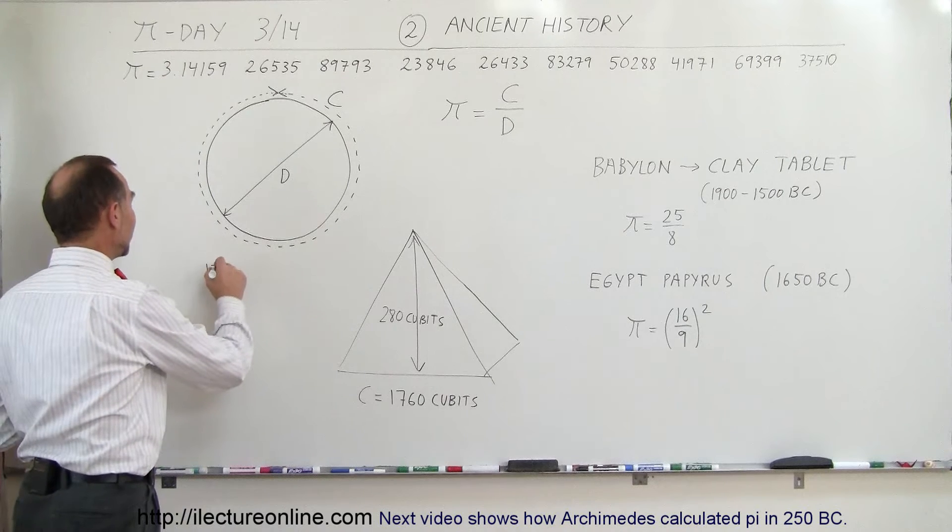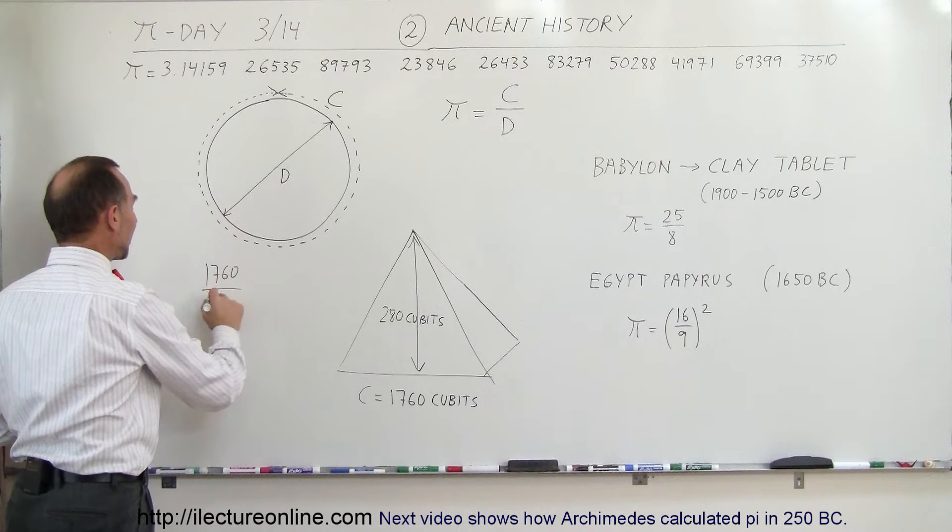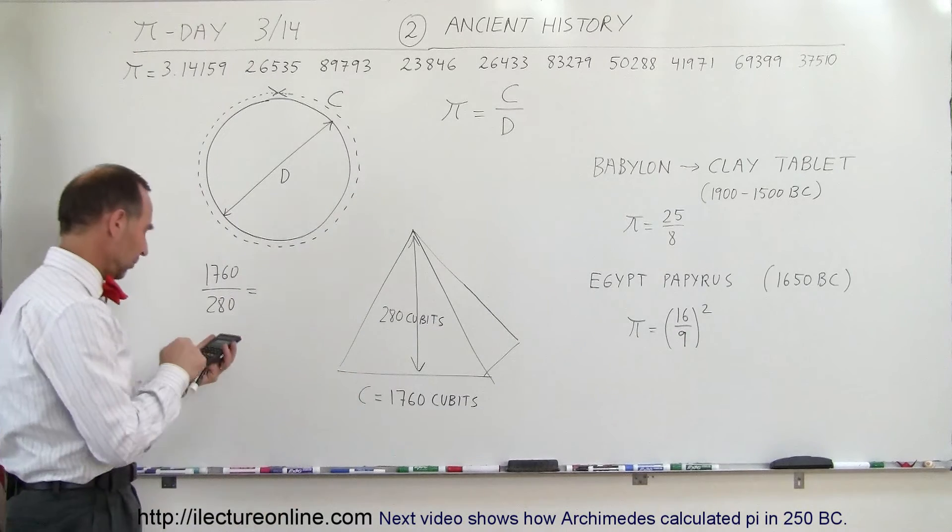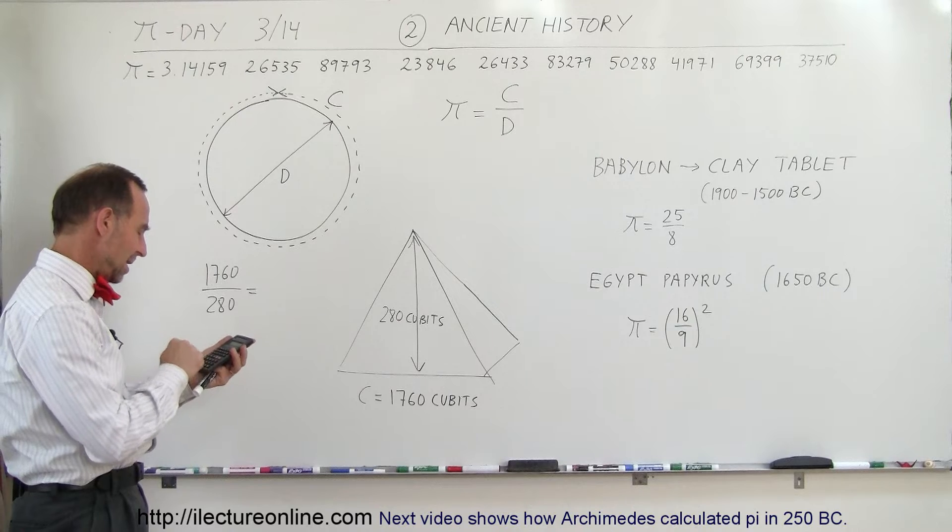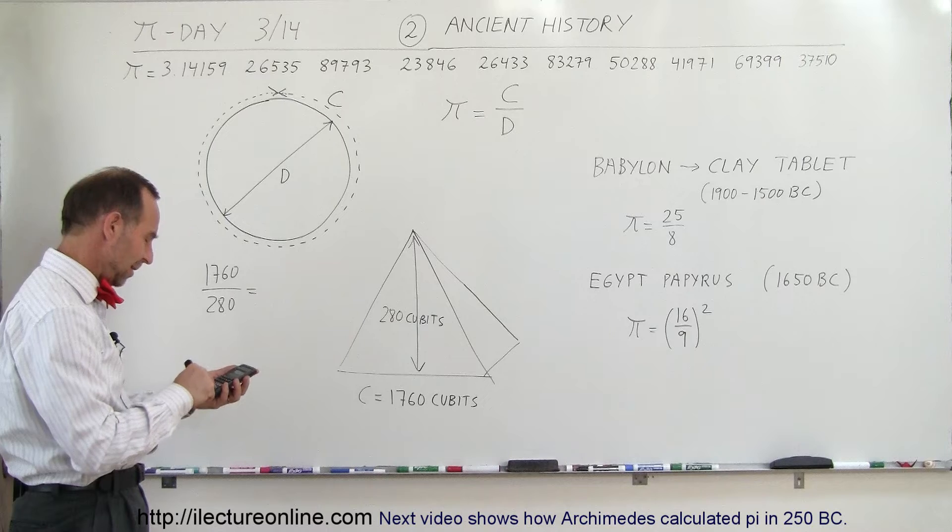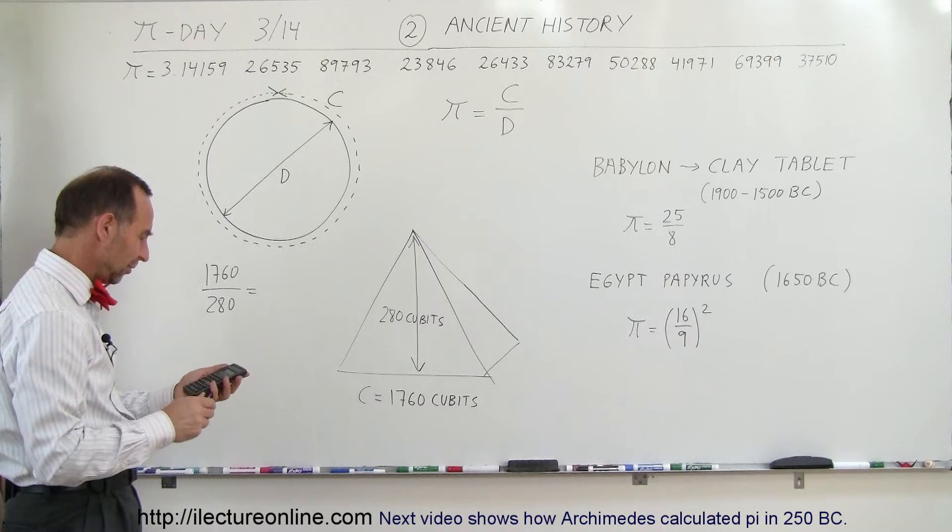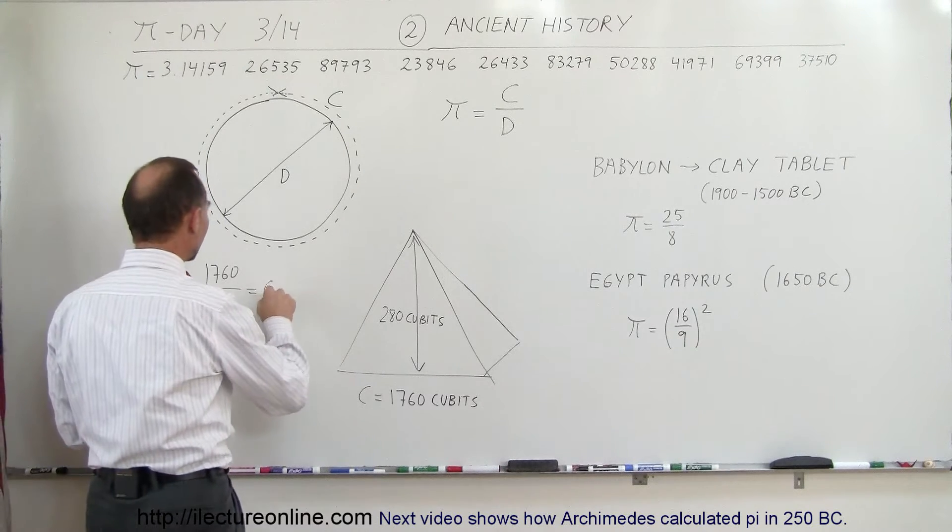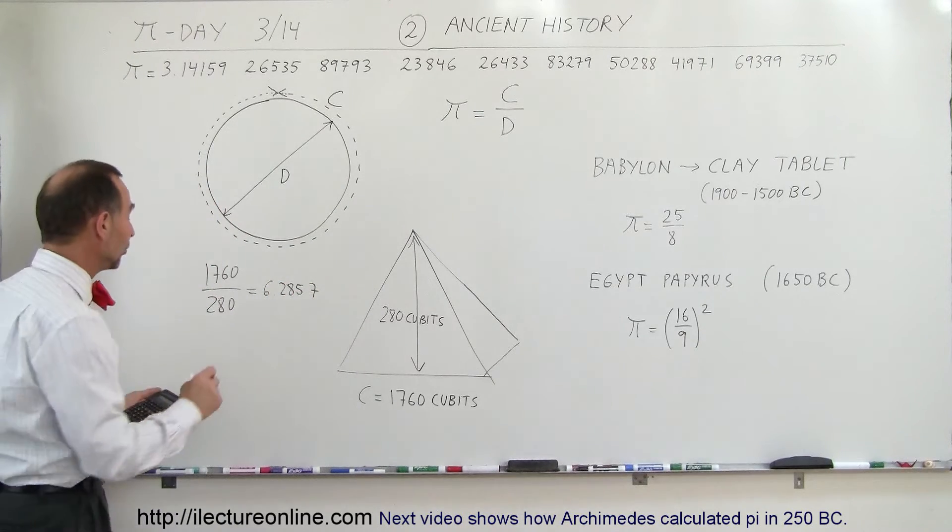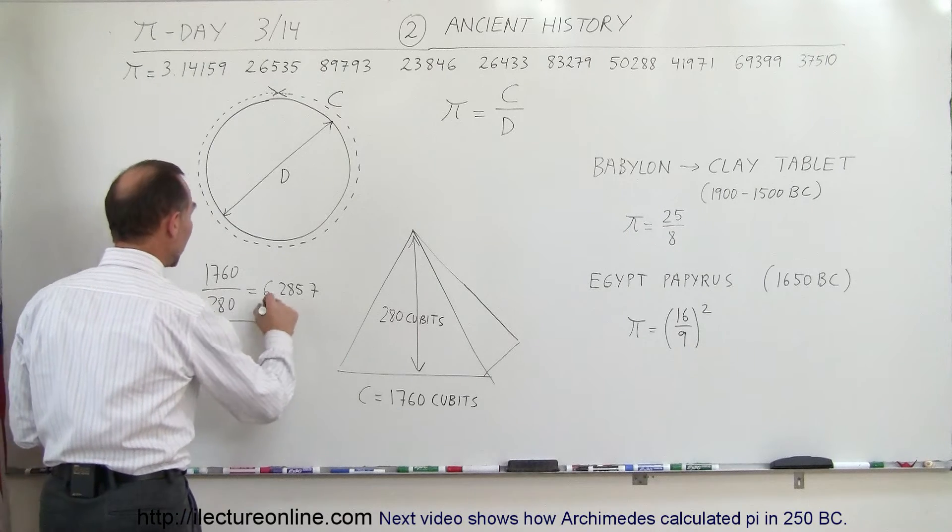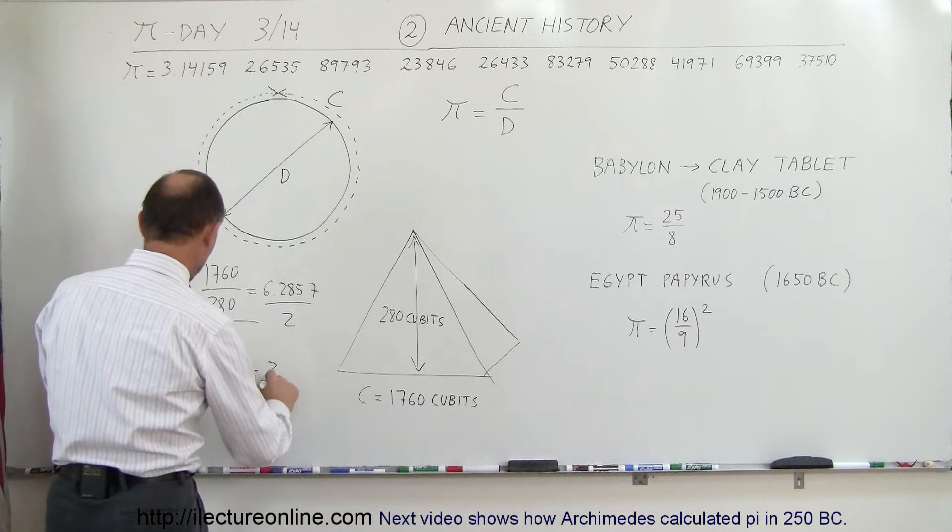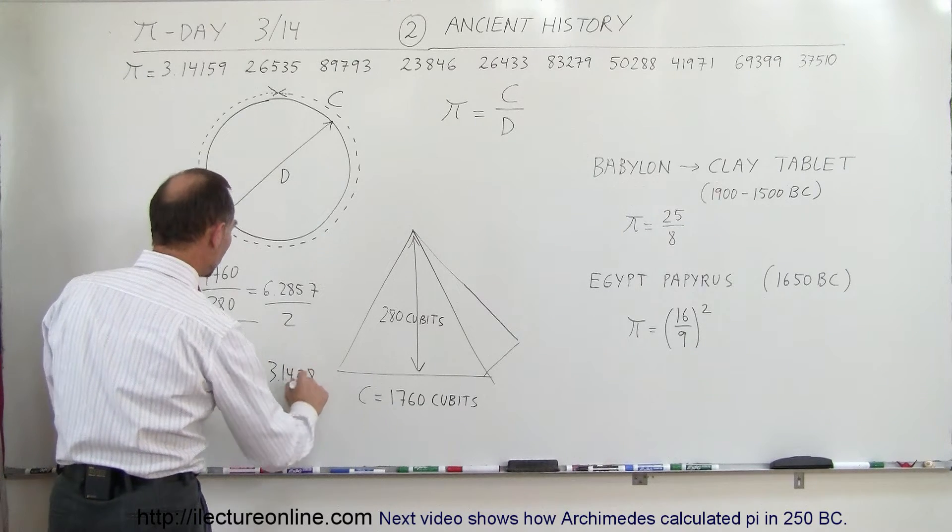Let's try that. So we take 1760 and divide that by 280. What do we get? 1760 divided by 280 equals 6.2857. Now let's divide that by 2. The whole thing divided by 2 equals 3.1428, which was more accurate than the most accurate value for pi that was discovered back in the old days.